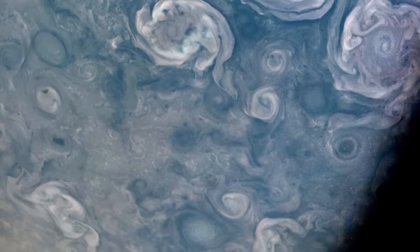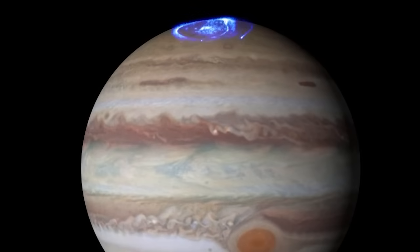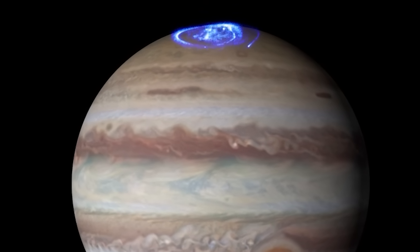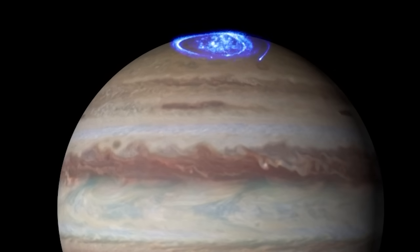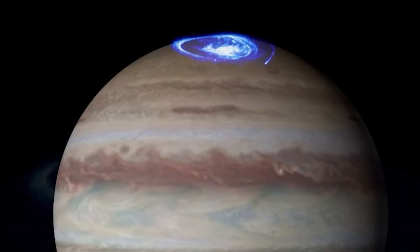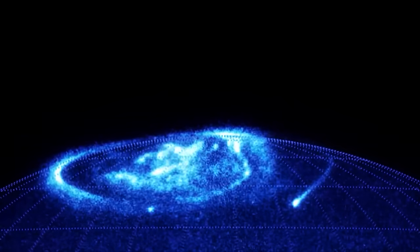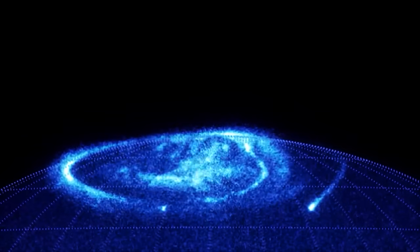Jupiter's auroras are made of charged particles from the sun, which react to its magnetic field. In other words, these charged particles will impact on the atoms and molecules of the atmosphere, which will emit light in a series of wavelengths that are specific to them.